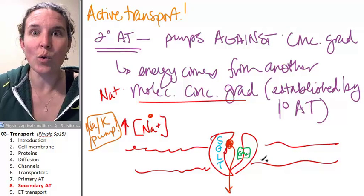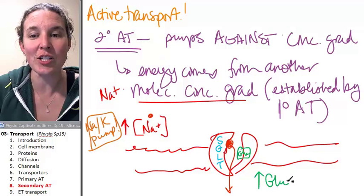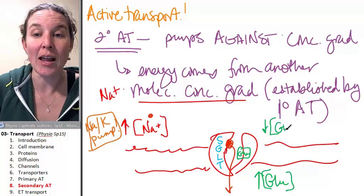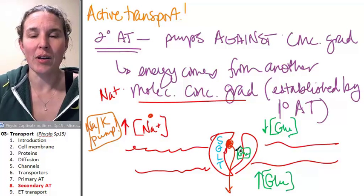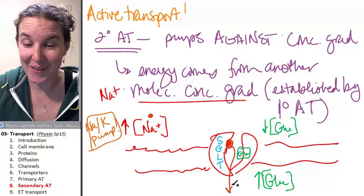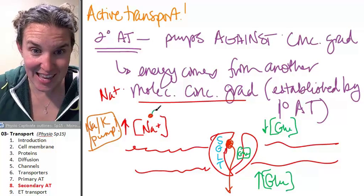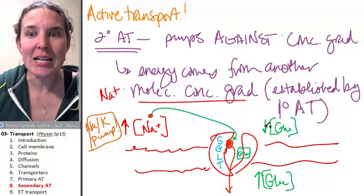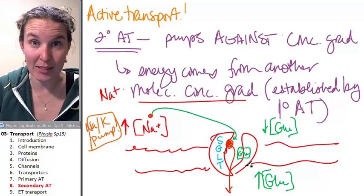And glucose would be an example of something that has a high concentration inside and a low concentration outside. The sodium is like, I don't care who else you bring along, I just want to go down my concentration gradient and get in. So SGLT is a secondary active transporter because it uses the energy in somebody else's concentration gradient to pump a molecule against its concentration gradient, which would be glucose in this example.